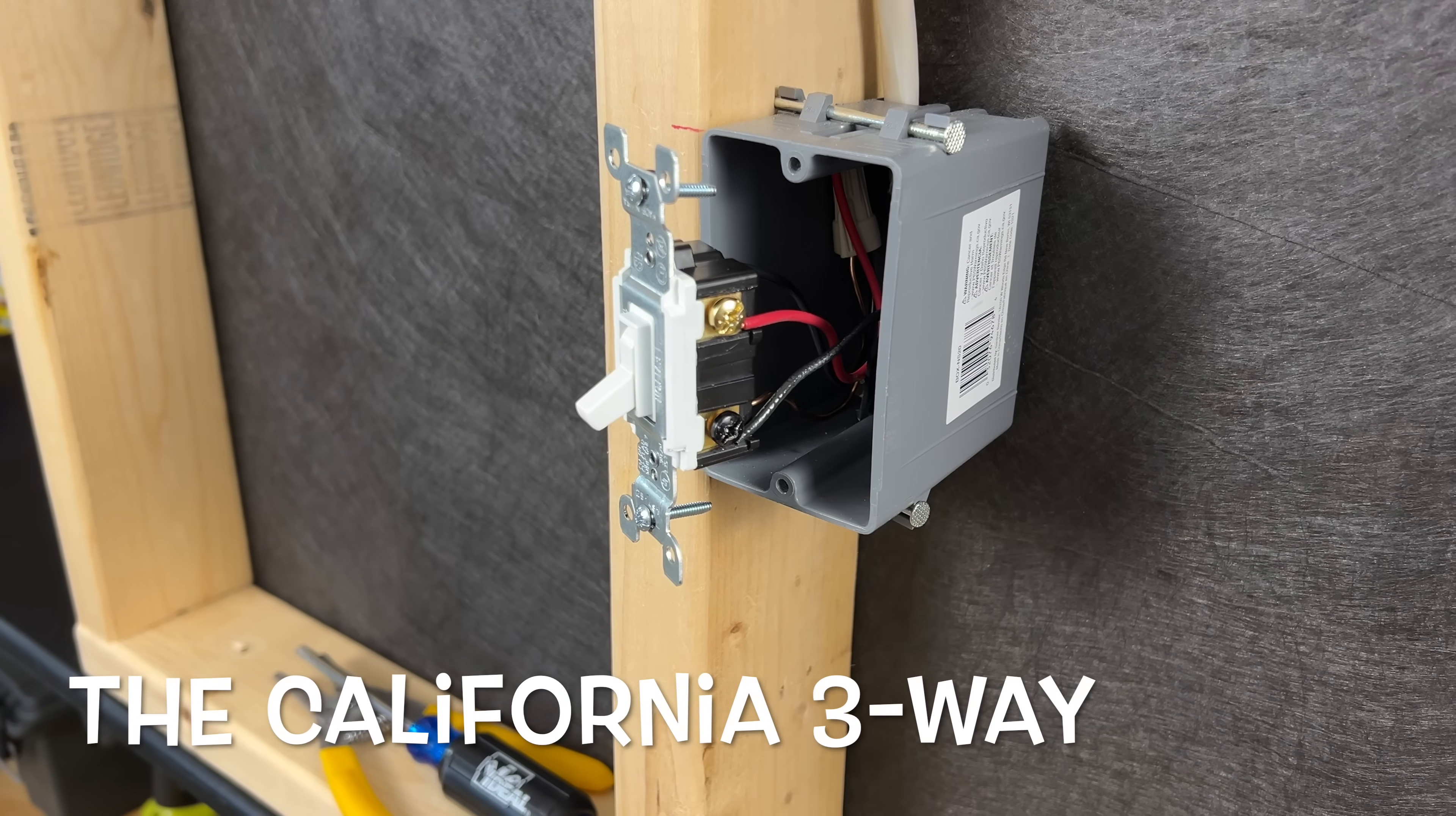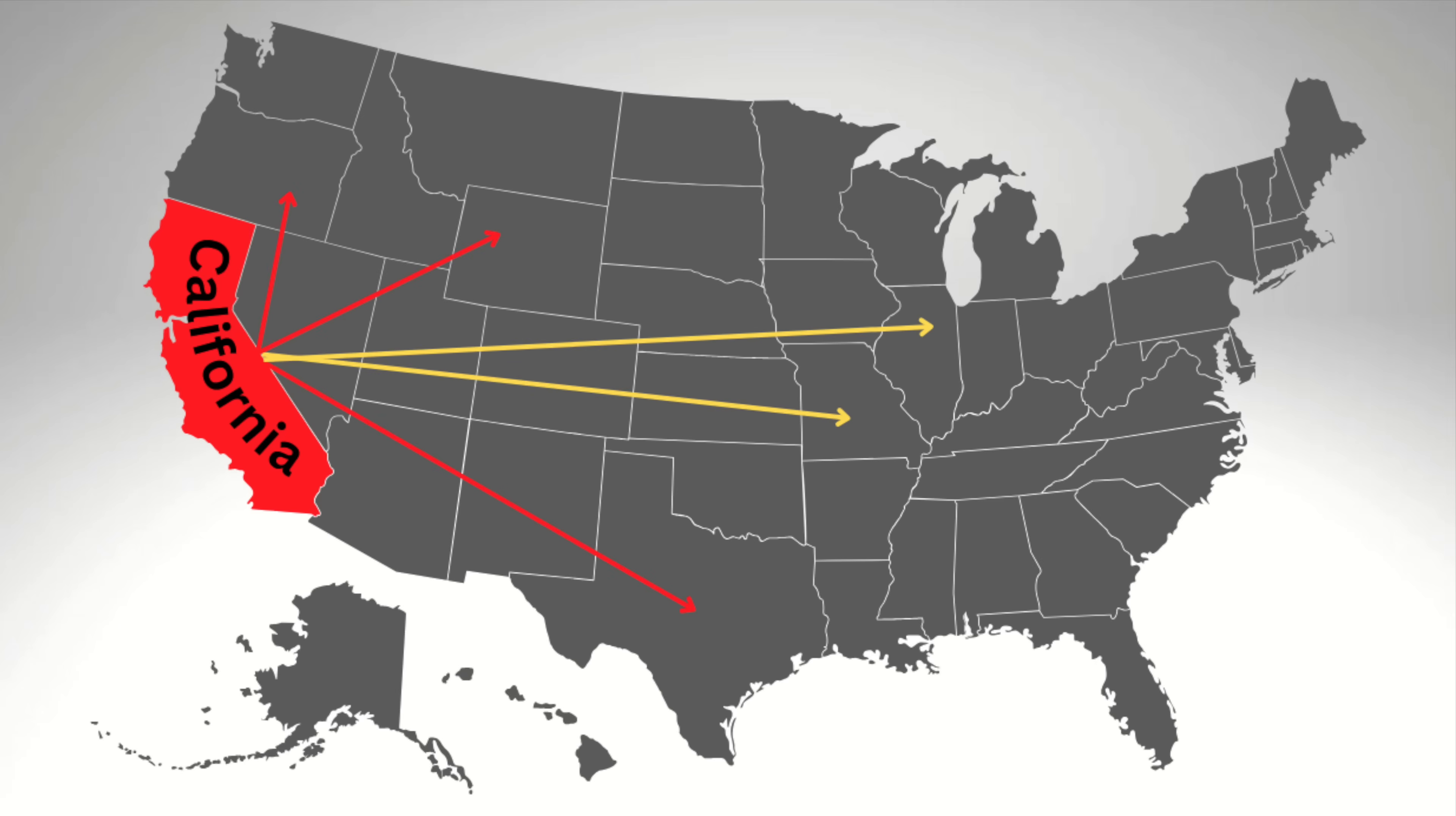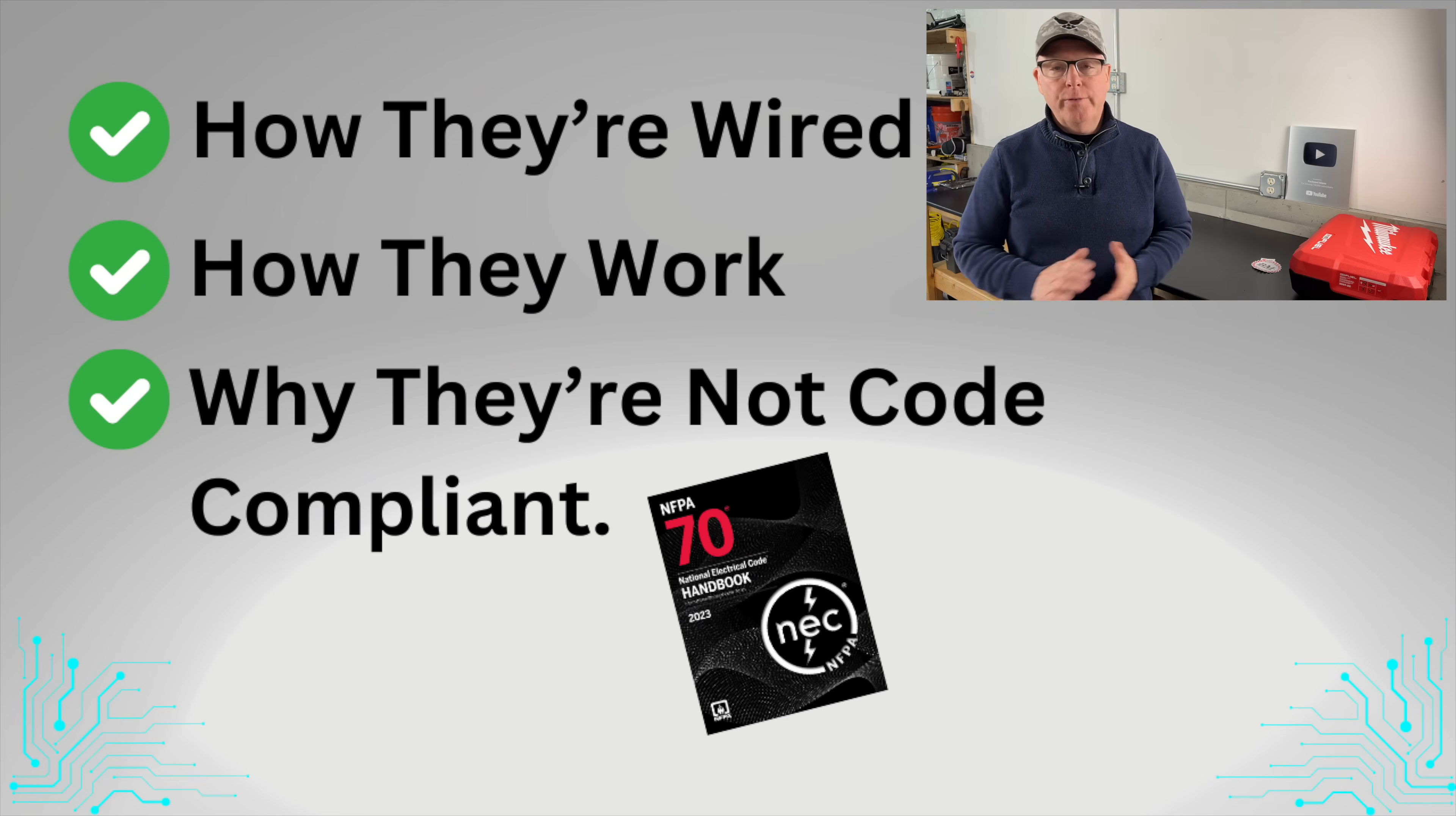The California three-way is a rare and now illegal wiring method not known by many electricians. A few counties in California had requirements where you couldn't run more than three conductors in certain raceways. Over the years, the California method was discovered and used by electricians from other parts of the country. They are out there and can be confusing to wire when replacing switches. In this video, I'll show you how they're wired, how they actually work, and then we'll take a look at the code book and figure out why they're not compliant for use today.